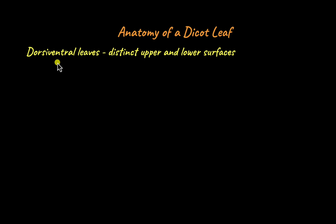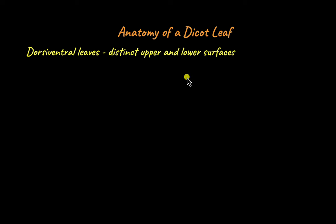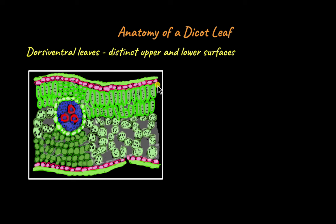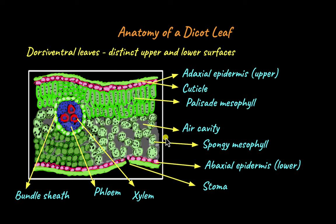Dicot leaves are called dorsi-ventral leaves. Dorsi-ventral means they have distinct upper and lower surfaces — dorsal means lower and ventral means upper. I'll explain in just a while why dicot leaves are called dorsi-ventral leaves. The transverse section of a dicot leaf looks something like this under a microscope, and these are the different parts of a dicot leaf.